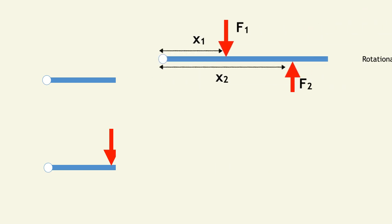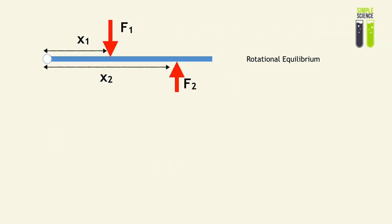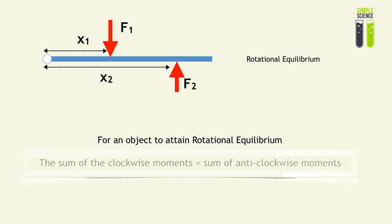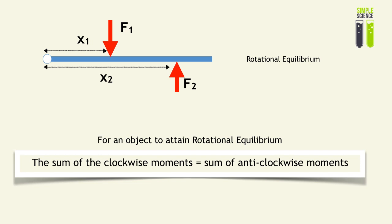So when we look at this mathematically, we realize that for an object to attain rotational equilibrium, the sum of its clockwise moments must be equal to the sum of its anti-clockwise moments. In this diagram, that is numerically equal to f1 times x1 equals f2 times x2. This is needed for this rod to be in rotational equilibrium.